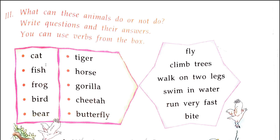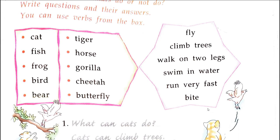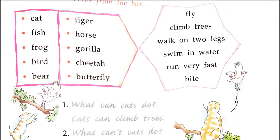In the animals section, there is a name of these animals. You need to tell what they can do and what they can't do. And if you want to make a sentence, you can use the verb box. The first one has been done for you.